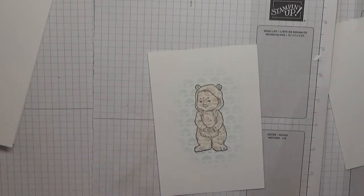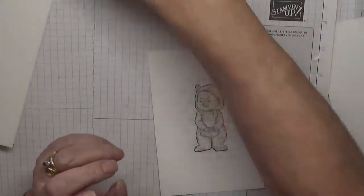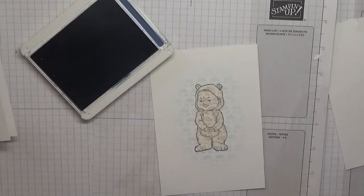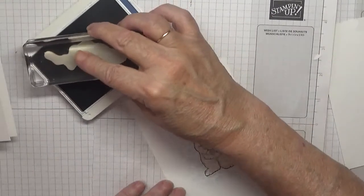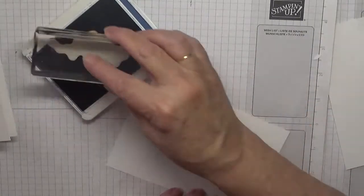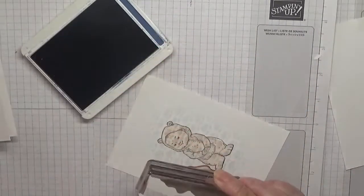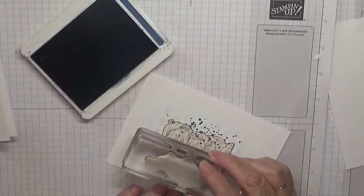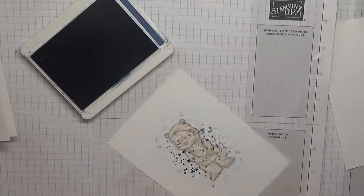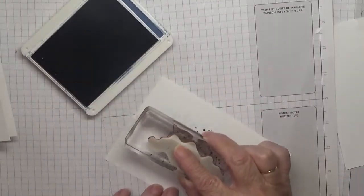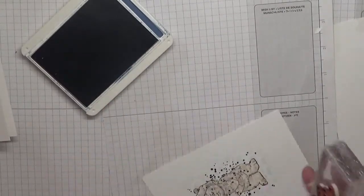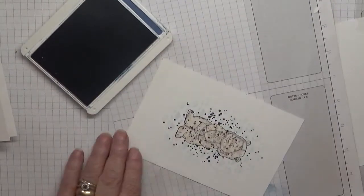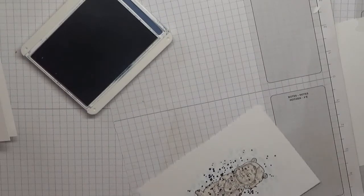Take that off, and now with Misty Moonlight we are going to stamp some dotage. So we're going to just do one stamp there, and a bit there, a little bit on his head and a bit around his feet. And that is it. I'll keep that out.